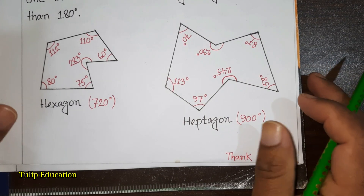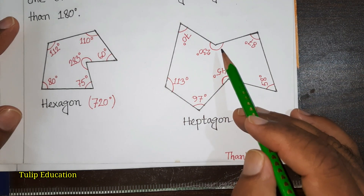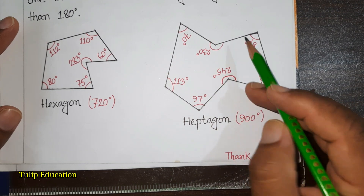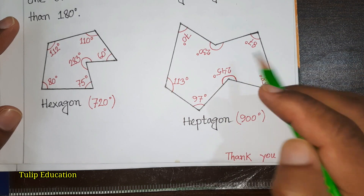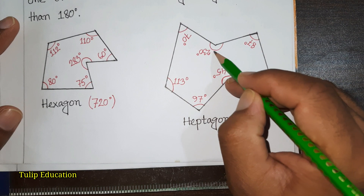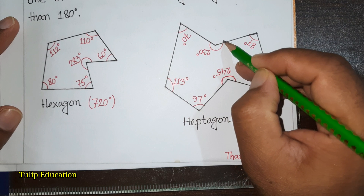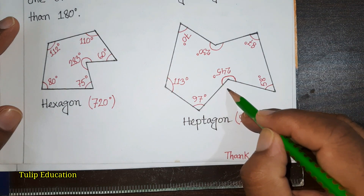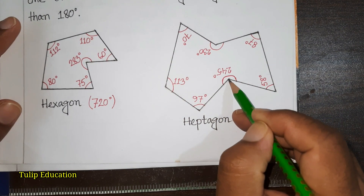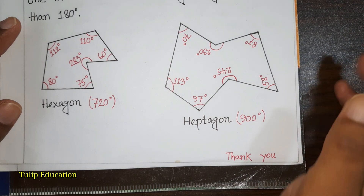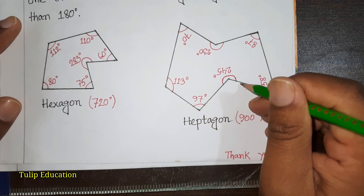In this heptagon, as there are seven angles, you can see two of those angles are greater than 180 degrees — one is 230 degrees and another is 245 degrees. These are interior angles because they are inside the shape, while the angles on the outside are exterior angles. As we know, when two lines meet at a point, an angle is created.